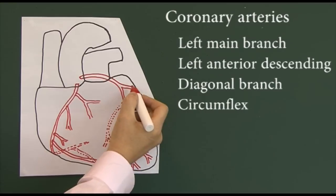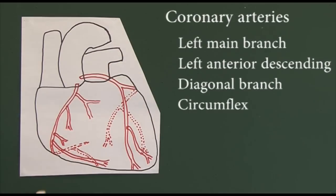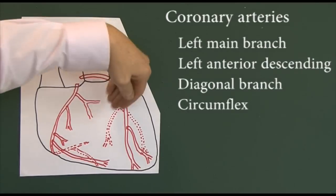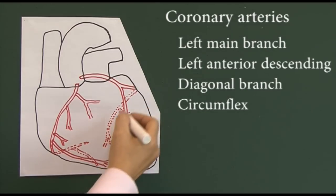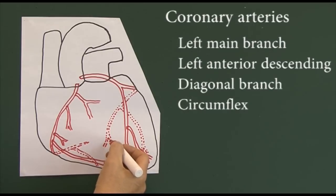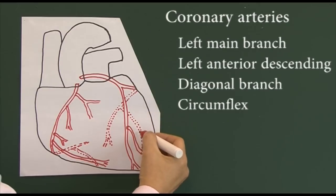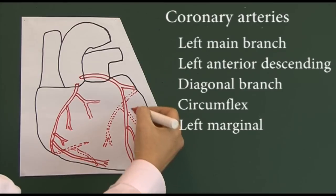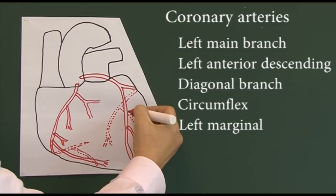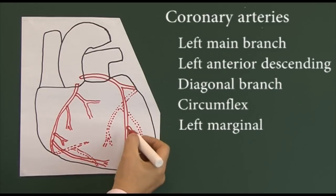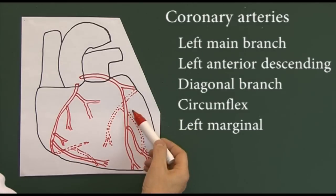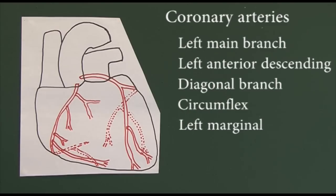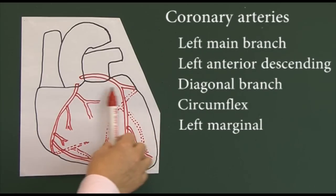Dotted lines indicate the artery is going round the back of the heart. So the circumflex artery is going round the back to the posterior surface of the heart, looping round to supply the back wall. There's a significant branch from it called the left marginal branch of the circumflex artery, which takes blood to the left side of the heart.